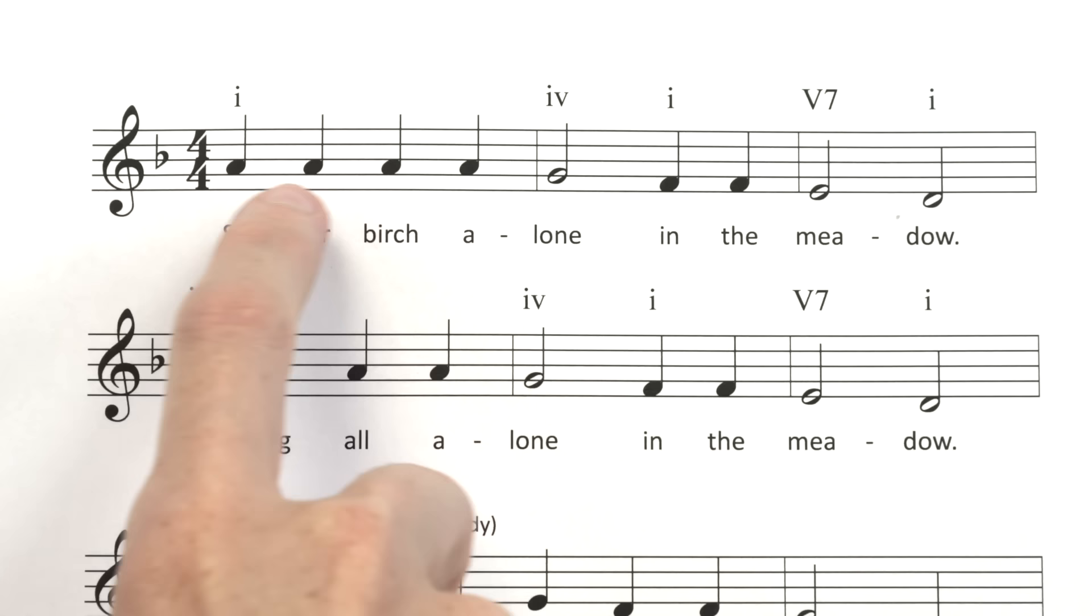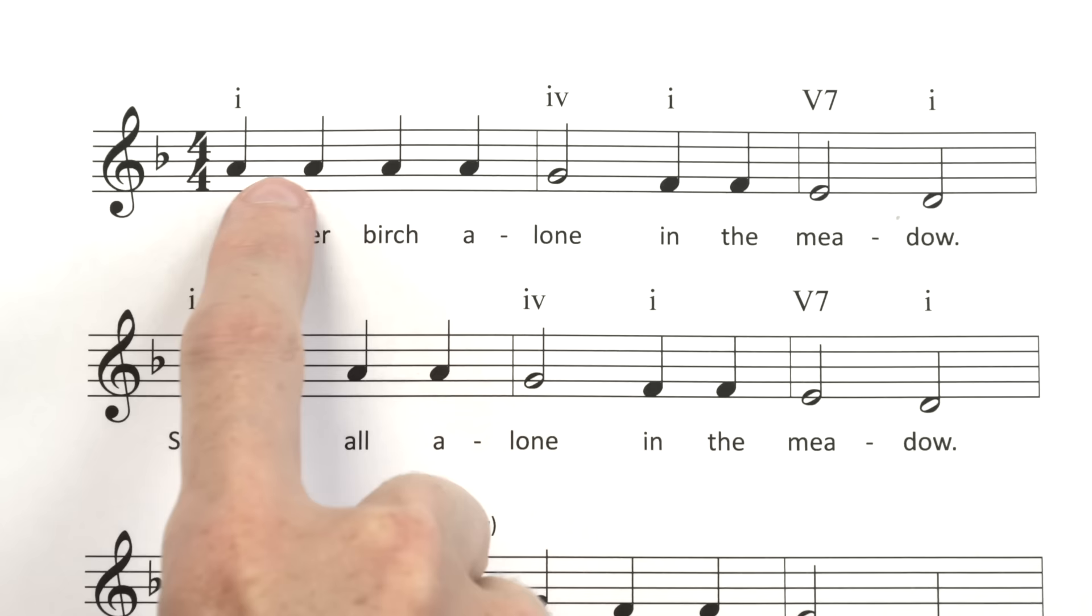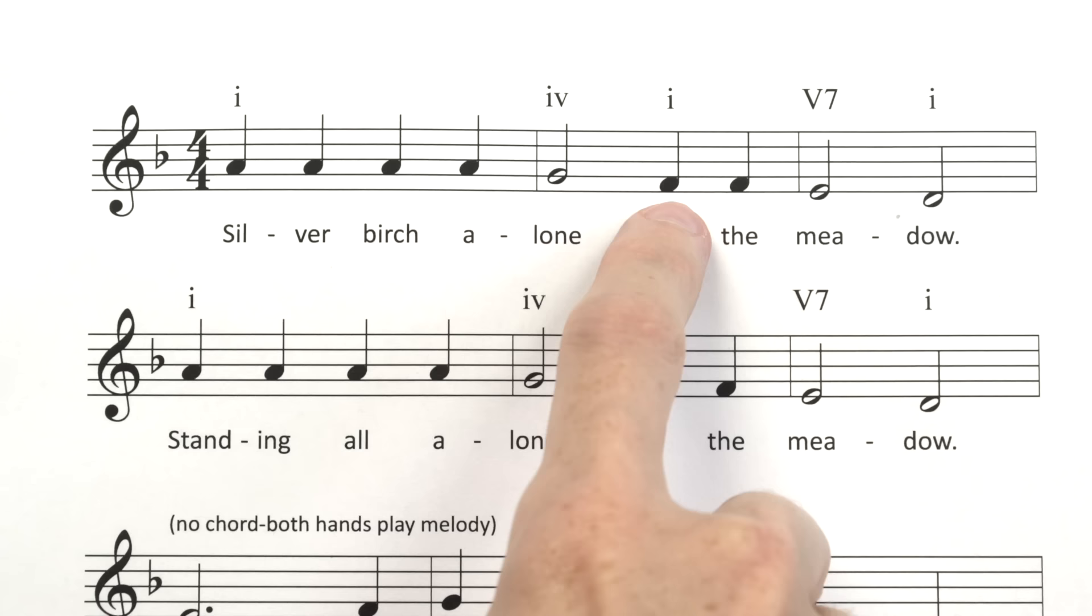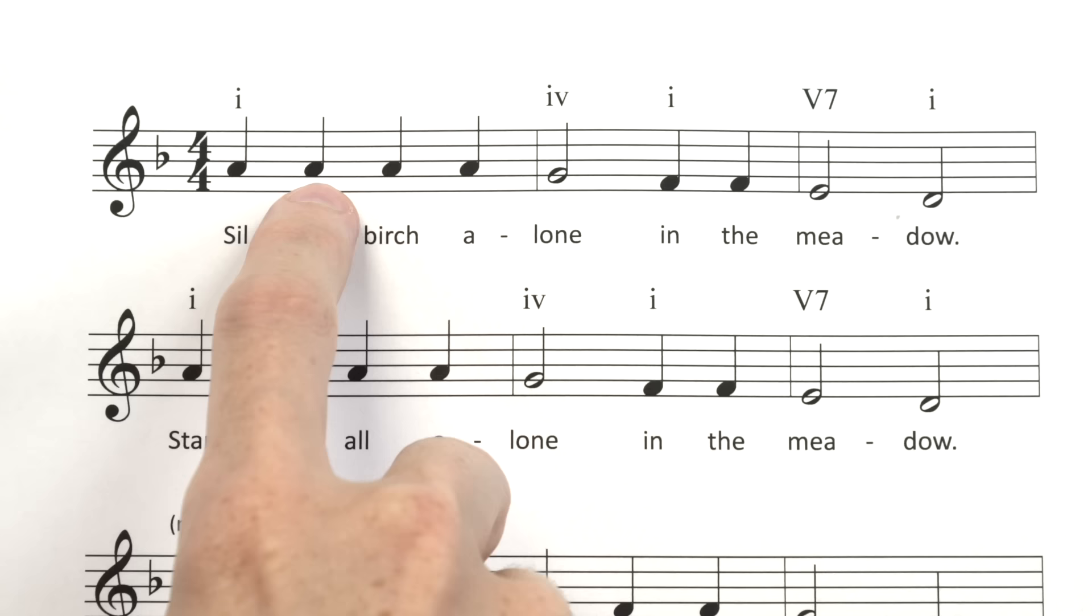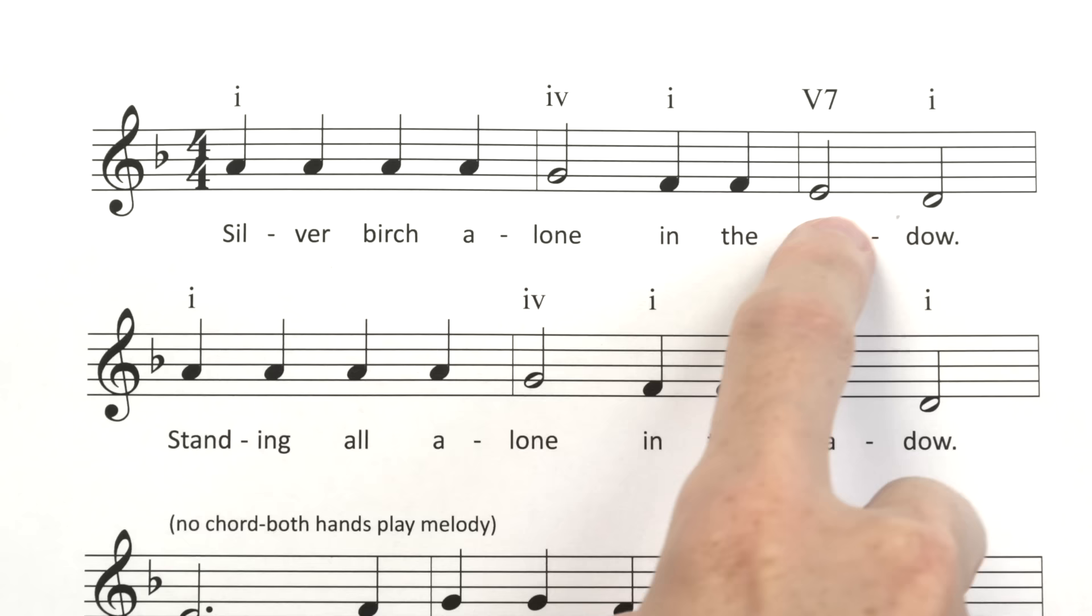Now can you point to each note and tell me if the notes are stepping, skipping, or repeating. Let's see if you can do it on your own. Say start for the first note and then the step skips or repeats. Go. So if you said start, repeat, repeat, repeat, step down, step down, repeat, step down, step down, you are correct.